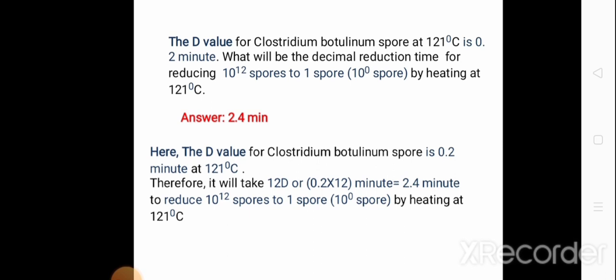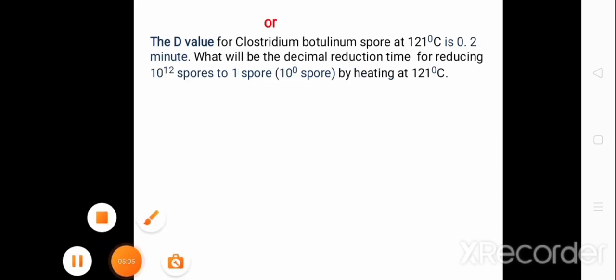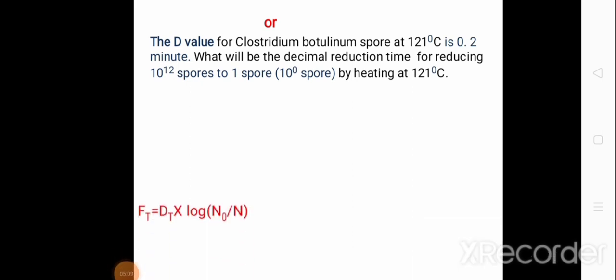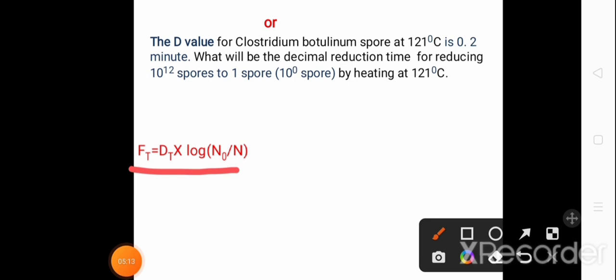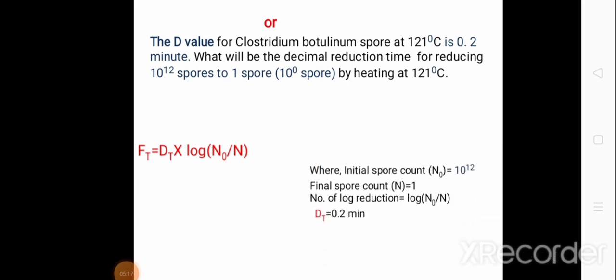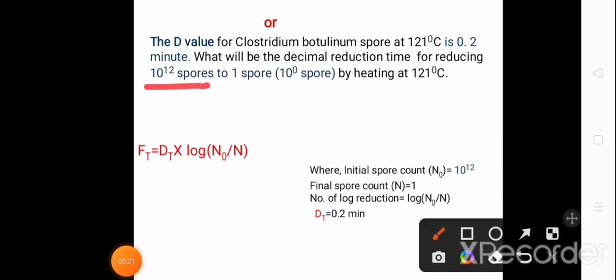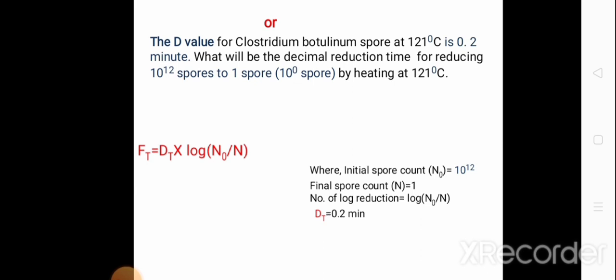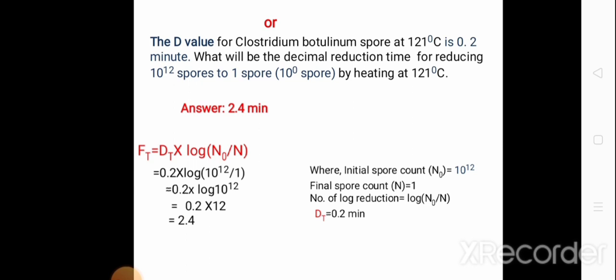This problem can also be solved another way using the formula. The initial spore count N₀ is 10¹², the final spore count N is 1, and the number of log reductions is log(N₀/N). The D_T here is 0.2 minute. Putting in these values, the answer is 2.4 minutes. So the decimal reduction time is 2.4 minutes for reducing 10¹² spores to 1 spore by heating at 121 degrees centigrade.